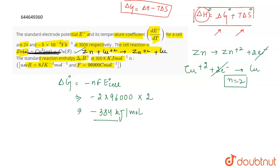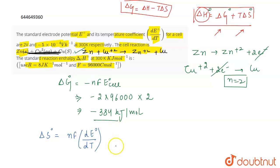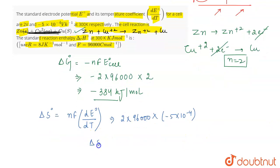Now ΔS° can be calculated using the formula: ΔS° = nF(dE°/dT). With n = 2, F = 96000, and dE°/dT = -5×10⁻⁴, the value of ΔS° comes out to be -96 joule per kelvin per mole.